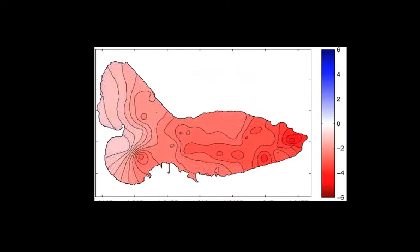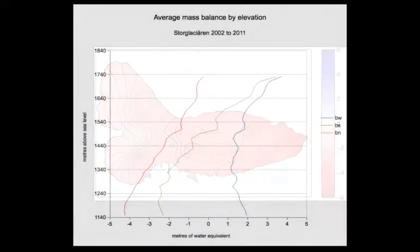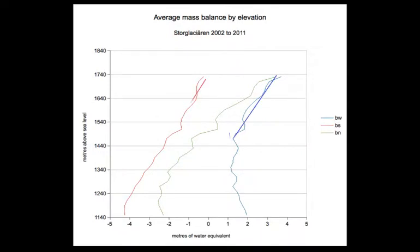The ablation pattern, whilst similar to the accumulation pattern, tends to have a simpler relationship to elevation. The ablation gradient follows elevation with only slight deviations from a linear relationship at the front and in the accumulation area.